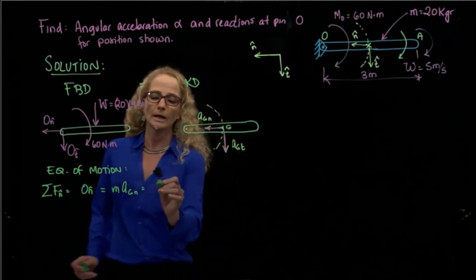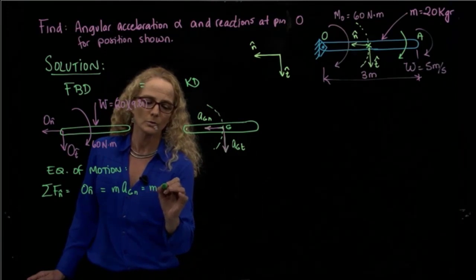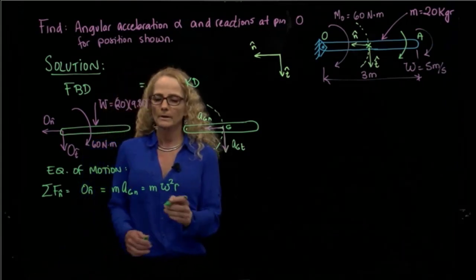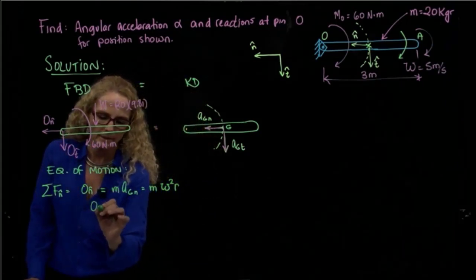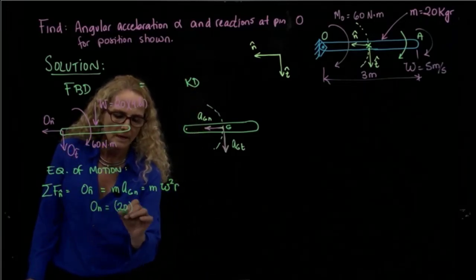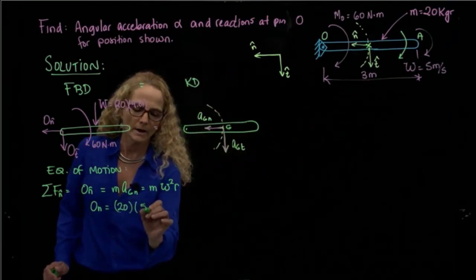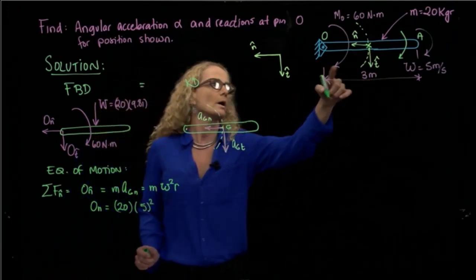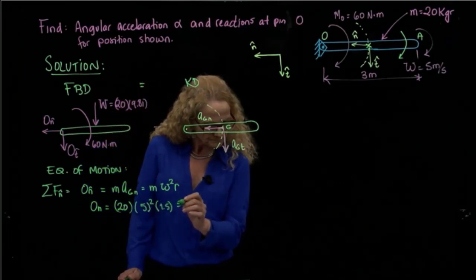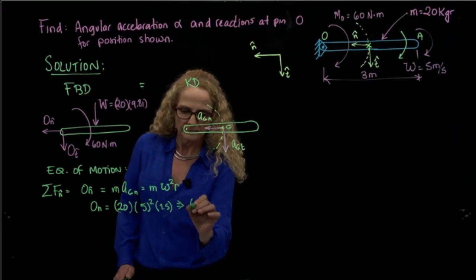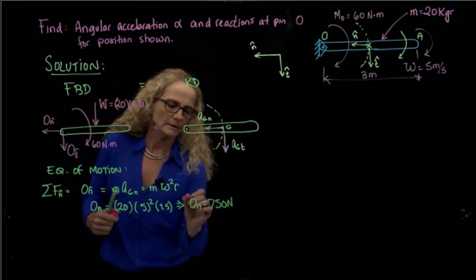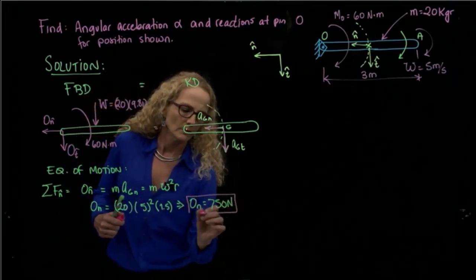From here, we can actually calculate my reaction, which will be 20 times the velocity given, 5 squared times 1.5, which is the direction to it. So, and that's equals to 750 newtons. So that's the first variable that I found.